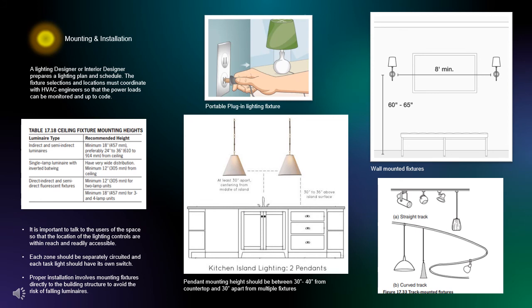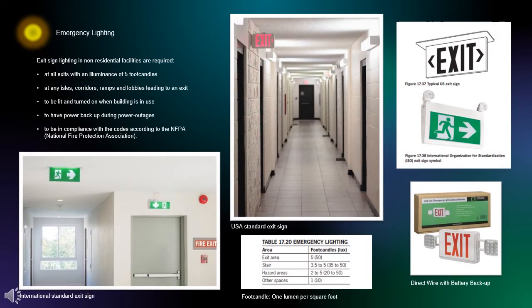When it comes to wall-mounted fixtures, it is important that they are at least 60 to 65 inches from the ground and a minimum of 8 feet apart. All commercial buildings require emergency lighting. Exit sign lighting in non-residential facilities is required at all exits with an illuminance of 5 foot candles. A foot candle is 1 lumen per square foot. All aisles, corridors, ramps, and lobbies leading to an exit also require an exit sign light. These lights should be on while the building is in use at all times, and it is recommended to have power backup during power outages. That can be done by purchasing an exit light that has direct wire with battery backup, so the battery charges while the wire is hooked up and on in the building. This is all recommended to be in compliance with codes according to the National Fire Protection Association, otherwise known as the NFPA.